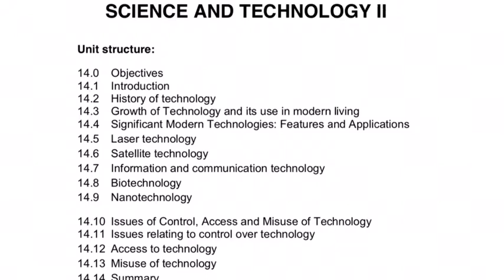Medieval Period. Technology advanced further because of the growth of science as a separate branch of study. Several schools and colleges dedicated to research in science were established. The Renaissance period gave encouragement not only to scientific experiments but also to scientific thought. The creators of modern science belonged to this period. Several laws and theories in physics, biology, chemistry, astronomy, etc. were established. Development in weapons technology changed military warfare. The invention of the printing press revolutionized the spread of knowledge and information.